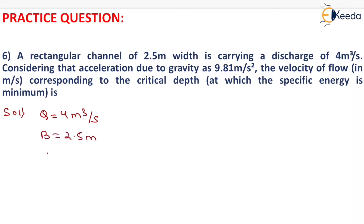Therefore, small q will be equals to capital Q by B, which equals 4 upon 2.5. After solving this, we will have 1.6 meter square per second, that will be the value of small q.